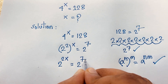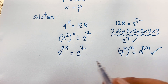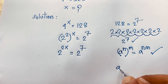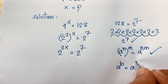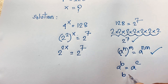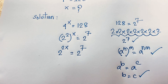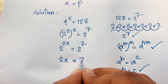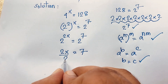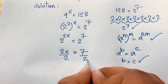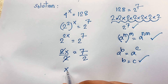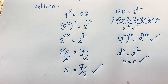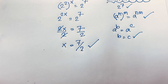Now we have 2 to the power 2x is equal to 2 to the power 7. According to the exponential formula, if a^b = a^c, then b = c. So 2x = 7. Dividing both sides by 2, we get x = 7 over 2. This is our final answer.